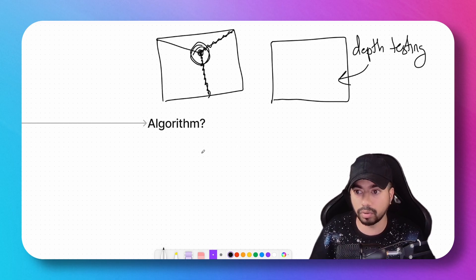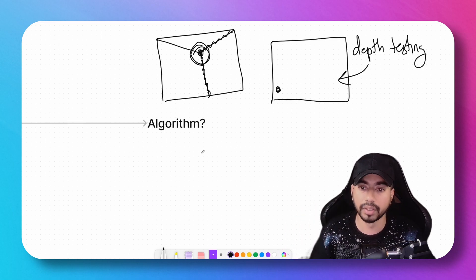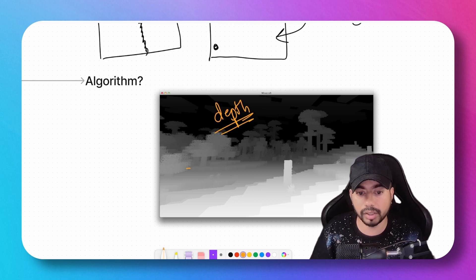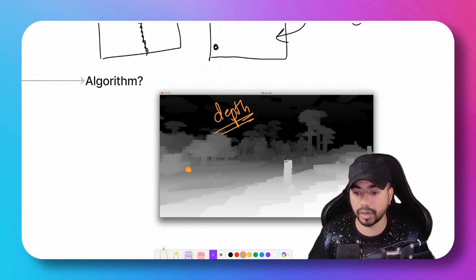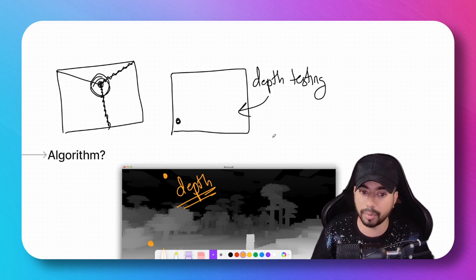For those who don't know what a depth buffer is: it's just an image where each pixel value corresponds to how far that pixel is from the camera. This is an example depth buffer—this floor is very close to the camera, hence it's white; this is far away, hence it's dark. To implement ambient occlusion, we render a depth map where each point corresponds to how far the pixel is from the camera.